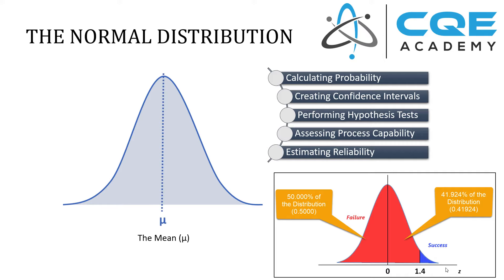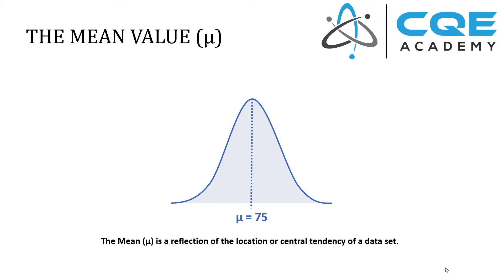The normal distribution can be fully characterized by two parameters: the mean and the standard deviation. The mean value is simply a reflection of the location or central tendency of a data set. For example, if we're talking about an exam score like a statistics exam or the CQE exam, and the mean value of our data set is 75, that means the average value of all the data within our data set is equal to 75. One key element of the normal distribution is that the median value equals the mean, which equals the mode.